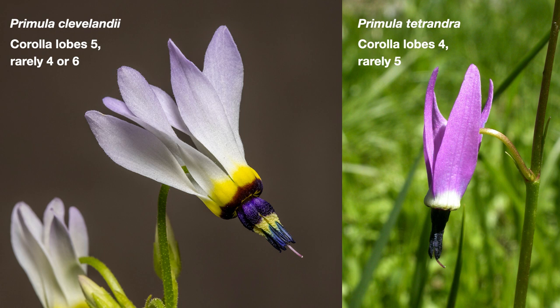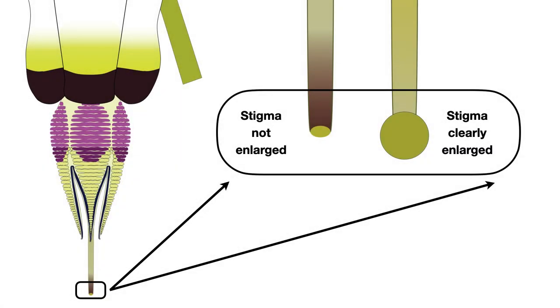How many corolla lobes does it have? Most species have five lobes, rarely four or six, while some have four, rarely five. How wide is the stigma? Is it enlarged and much wider than the style (three species), or about the same width (five species)?